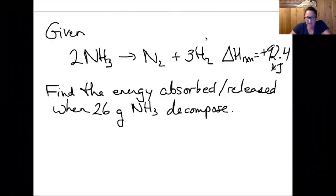Let's see what we can do with the heat of reaction. So suppose we're given this reaction: 2NH3, which is ammonia, decomposes into N2 and 3H2. This has a delta H reaction of positive 92.4 kilojoules.